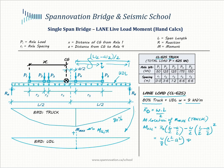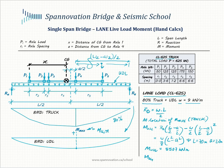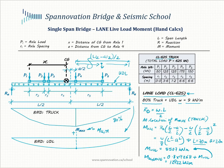Simplifying further gives W/8 times (L squared minus A squared). For a span of L equal to 70 meters and A equal to 2.2 meters for CL625, M_UDL works out to a specific value. The total lane loading moment is 0.8 times the truck moment from the previous tutorial plus M_UDL, giving 12,922 kN·m for a 70-meter span under CL625 lane loading. You can apply this to any span and lane loading scenario.